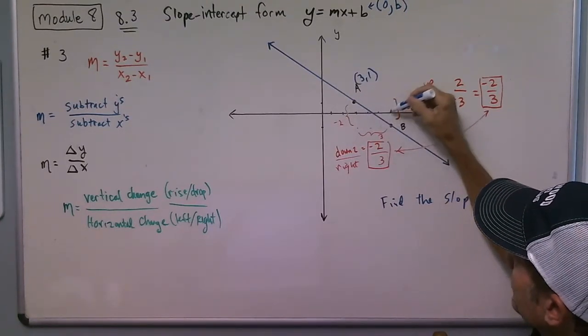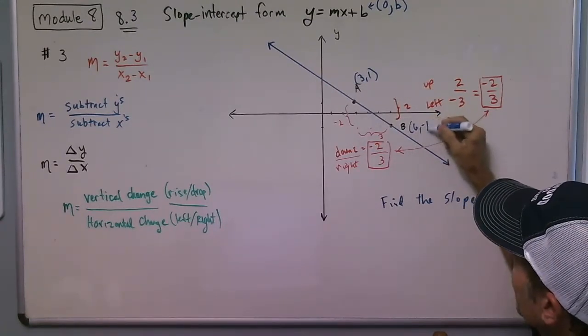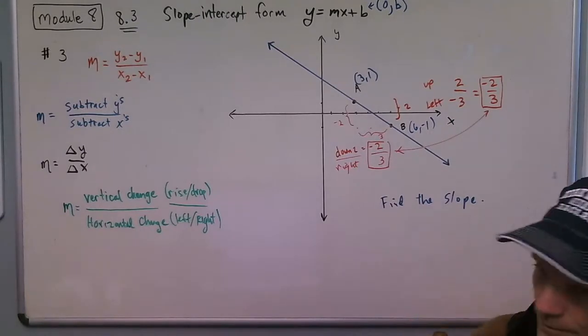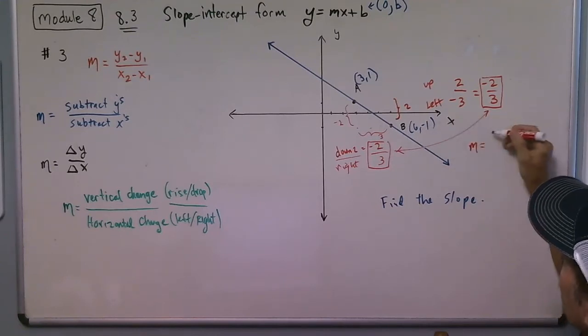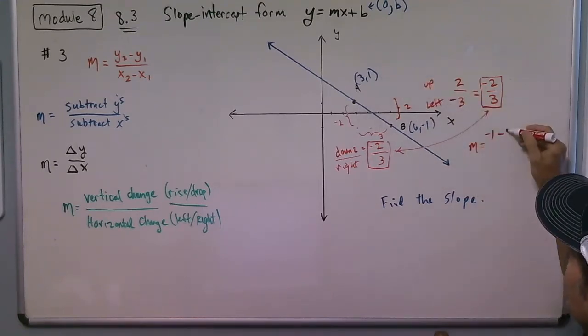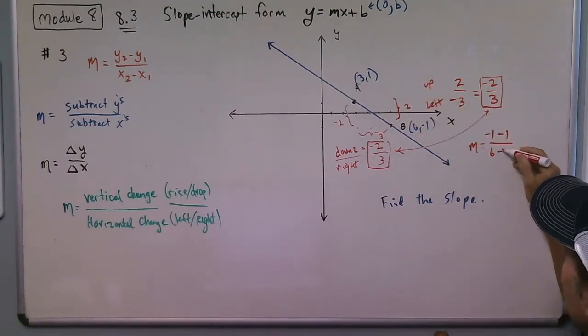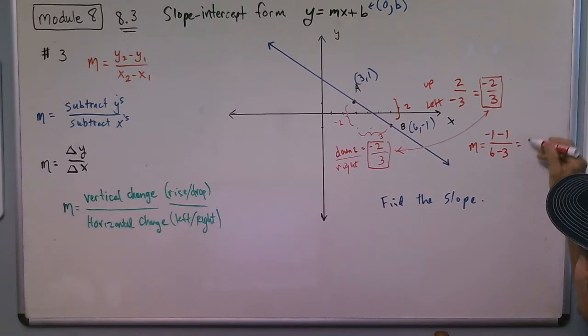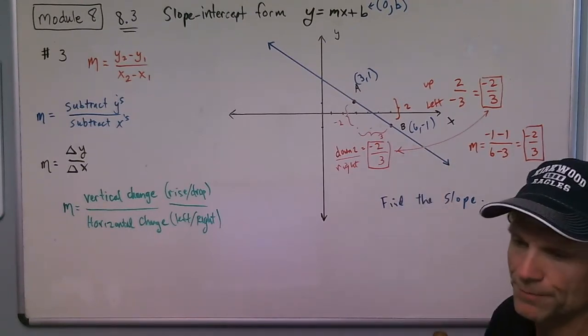And then I used the formula method. So the formula method is subtract the y's: negative 1 minus 1 over 6 minus 3. I get negative 2 over 3. So you can see it works with the formula method or the counting method.